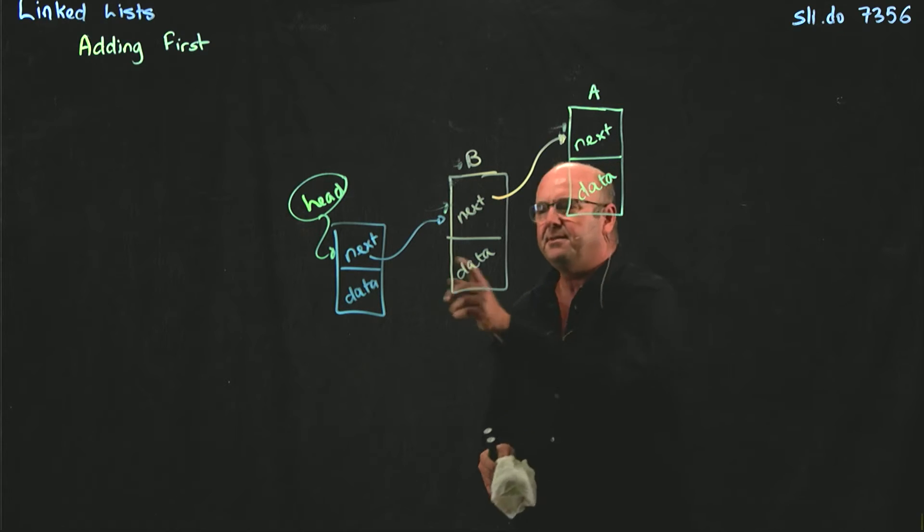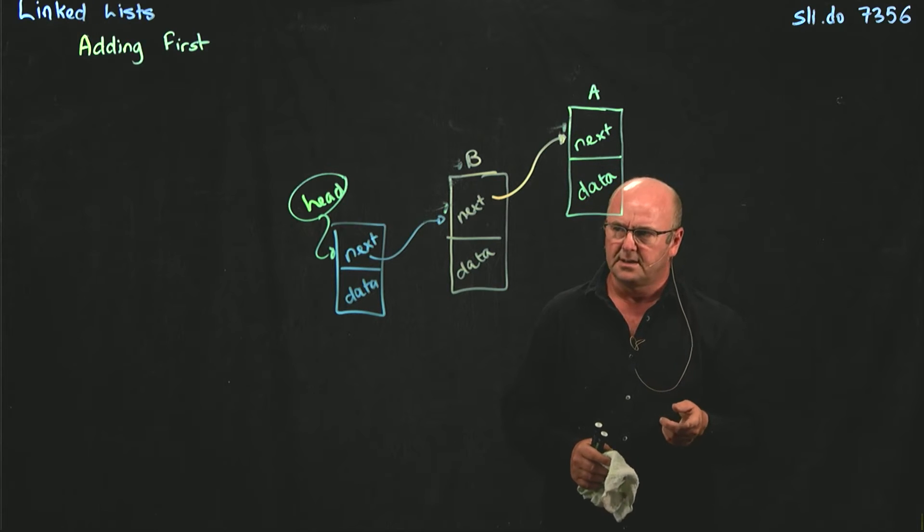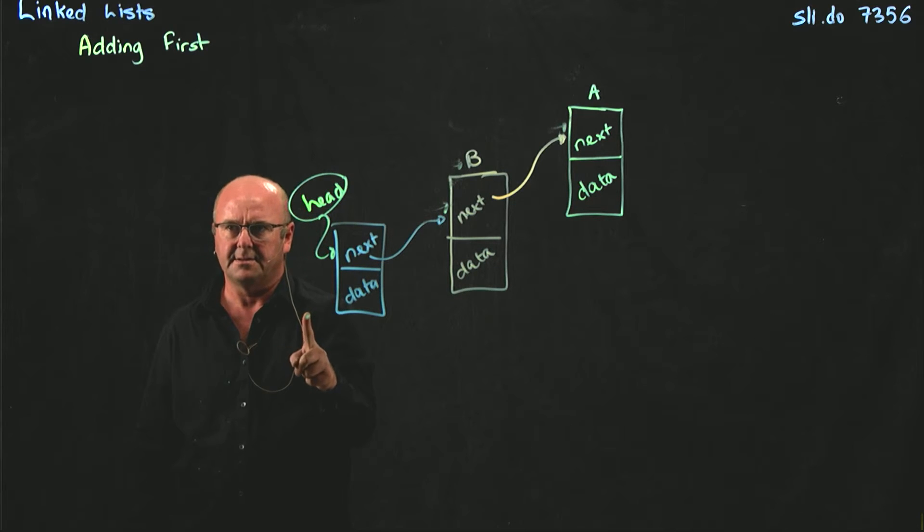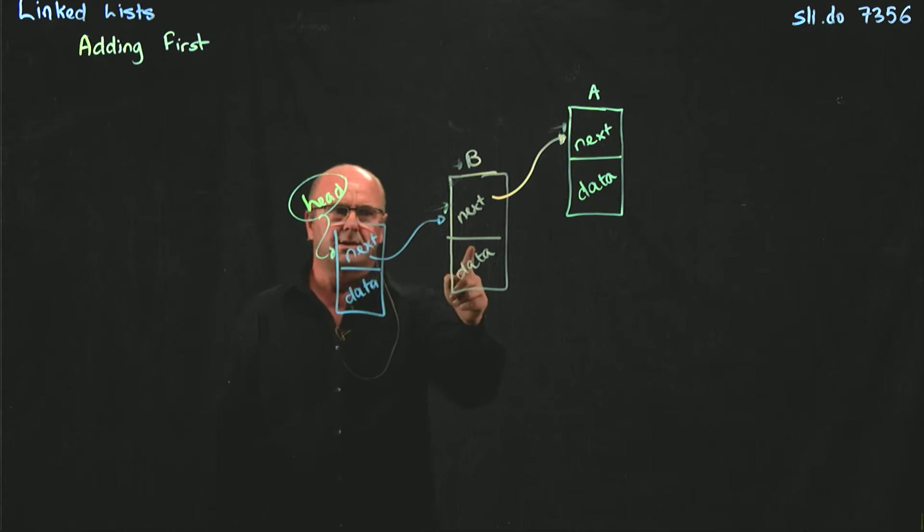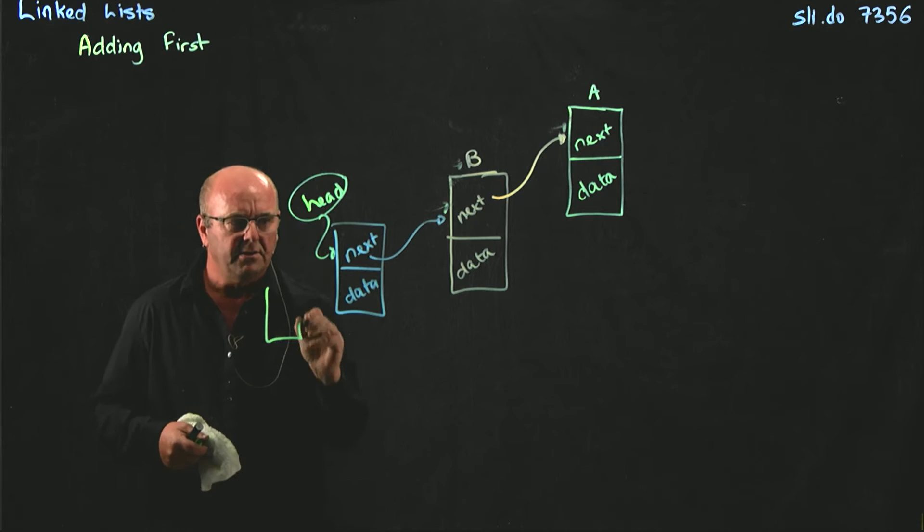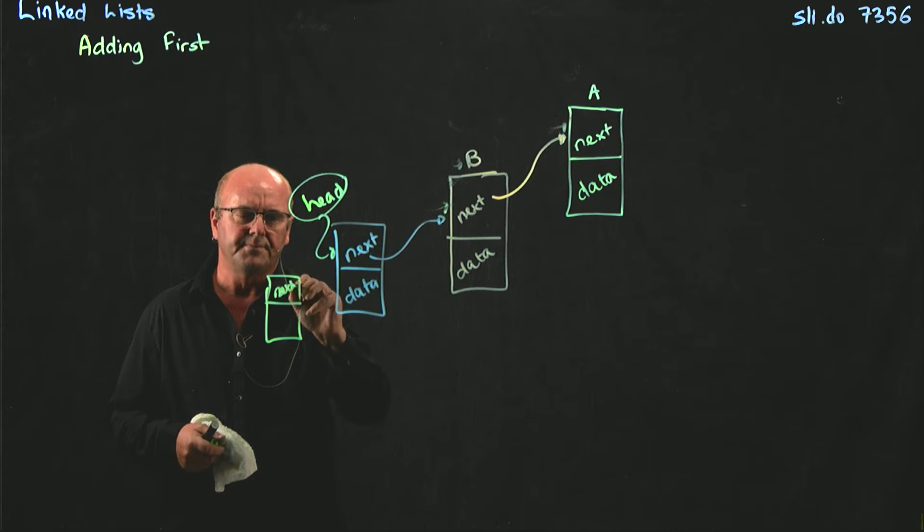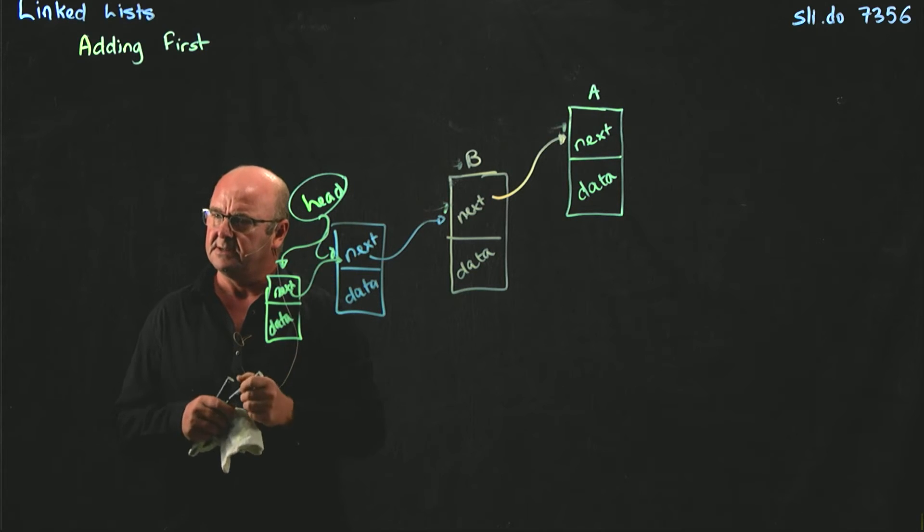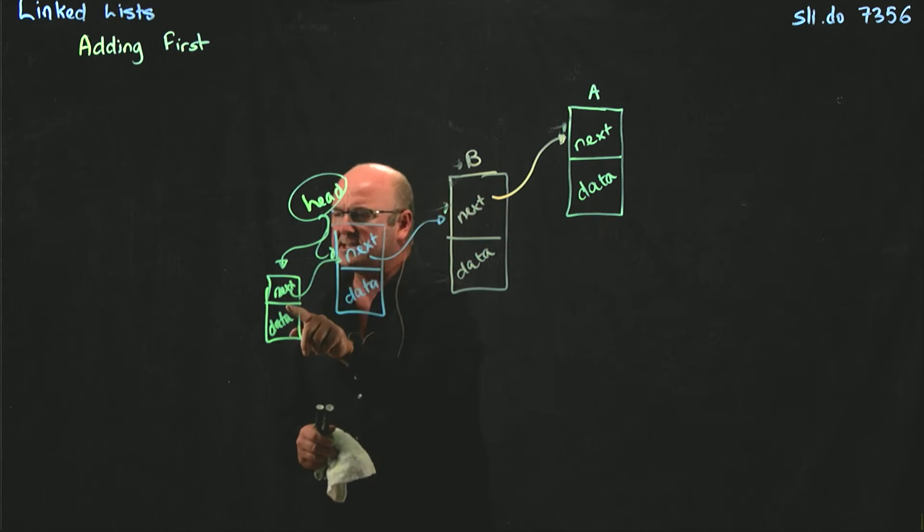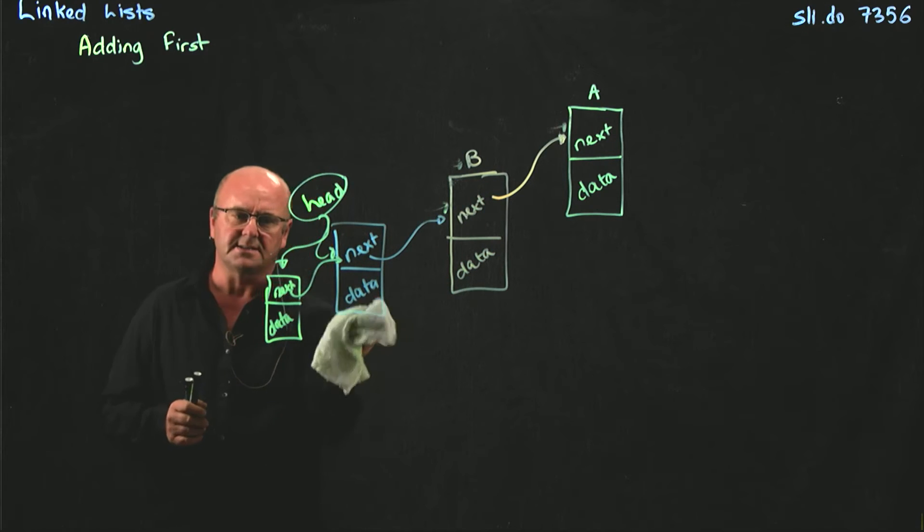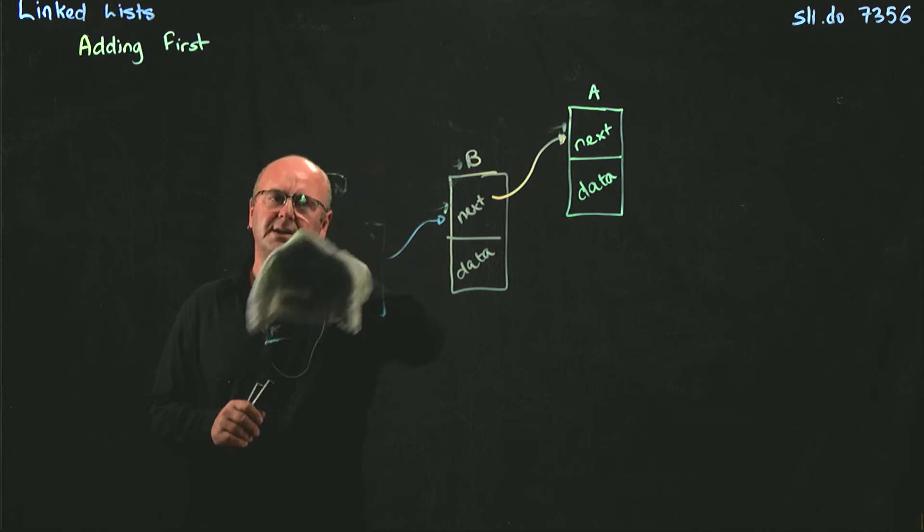If I have three things in my list and I want to add a fourth element to it, how many things do I have to look through to find the point where I'm adding it? No, not three. I know where head is, right? So if I want to add something at the beginning, all I say is here's my new node, I'm going to set my pointer and I'm going to move my head pointer. I haven't had to go all the way through the list to add something, right? So what's the complexity of adding to the beginning of a linked list? It's one, exactly.